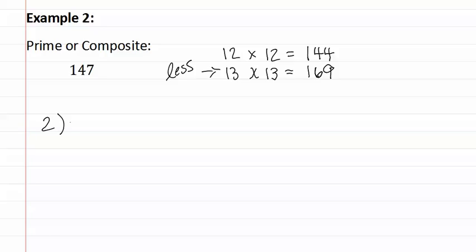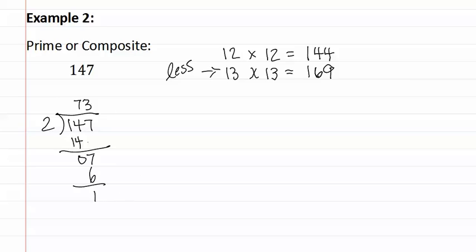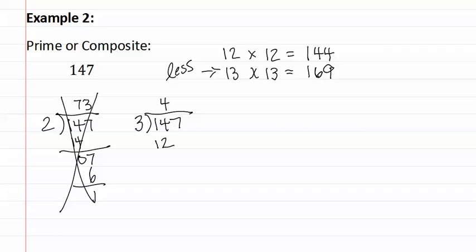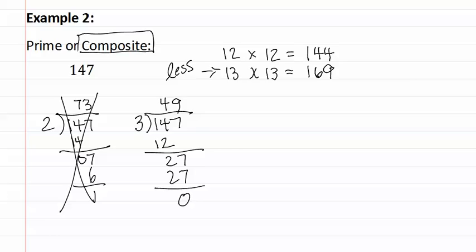Let's start looking at prime numbers that are less than thirteen, starting with two. Two goes into one hundred forty-seven: we see how many times two goes into fourteen, which is seven, and two goes into seven three times. We have a remainder, which means two does not evenly divide into one forty-seven. Let's try the next prime number, which is three. Three goes into fourteen four times, and three goes into twenty-seven nine times. The remainder is zero, meaning that three divides evenly into one hundred forty-seven. Since it has a divisor other than one and itself, this means that one forty-seven is a composite number.